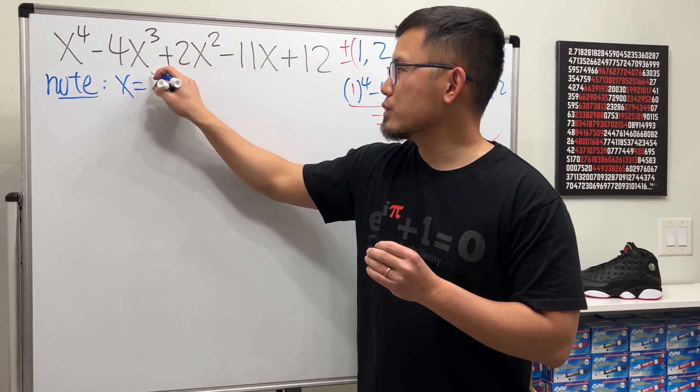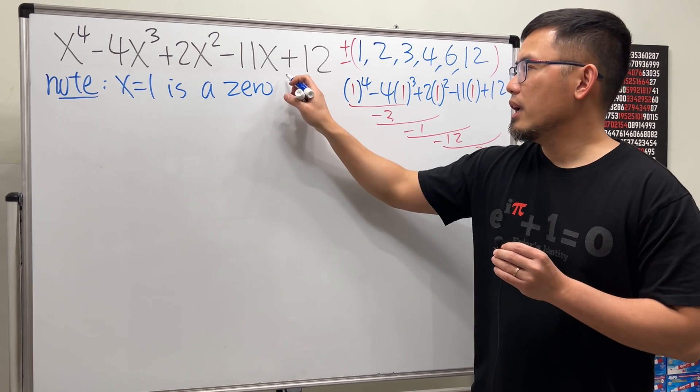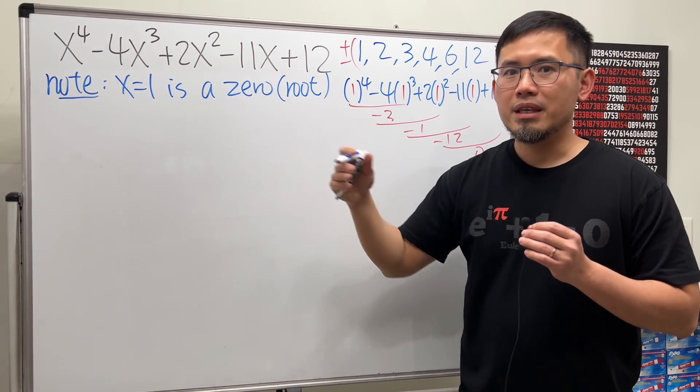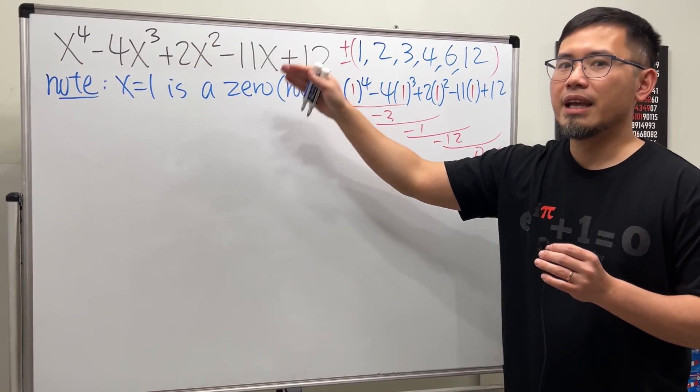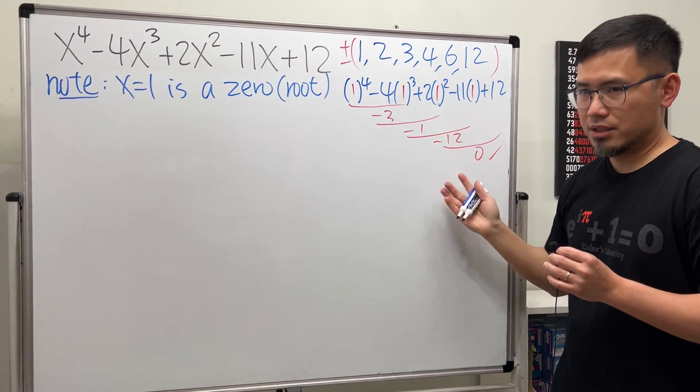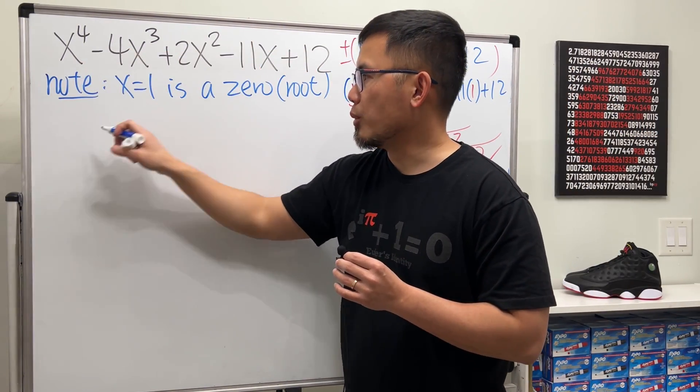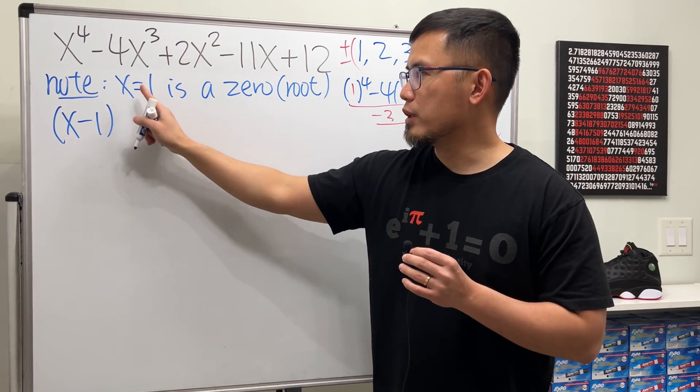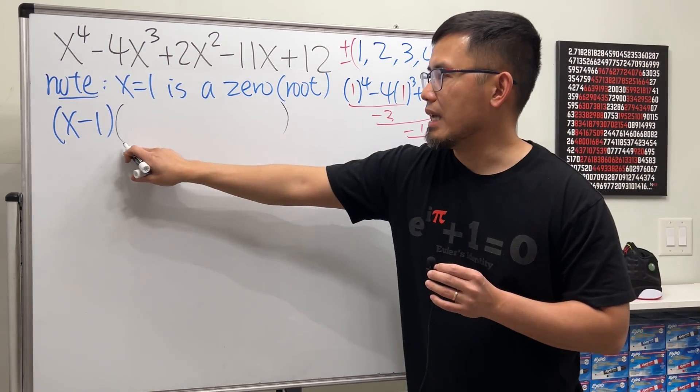x equals 1 is a zero of this polynomial, and sometimes people also call this a root of the polynomial. It just means that when you plug in this number into all the x's, the end result we get is 0. Furthermore, we know once we have this we can say this polynomial has a factor x minus 1. You just move the one to the other side and we'll just have to find out the other part.